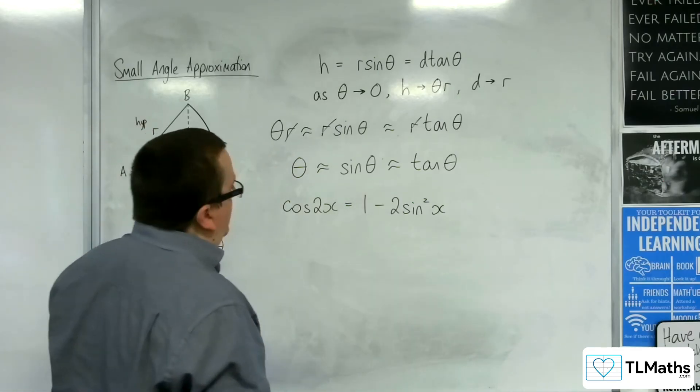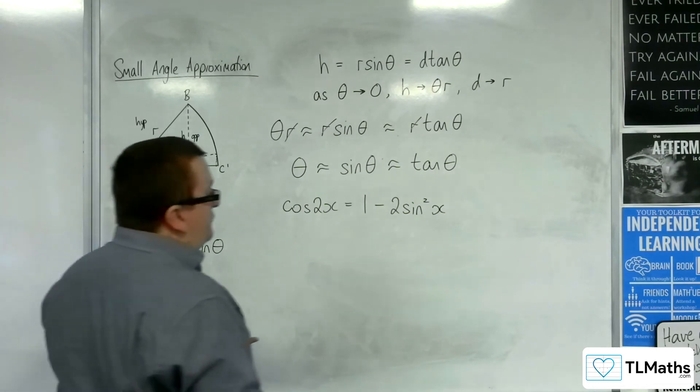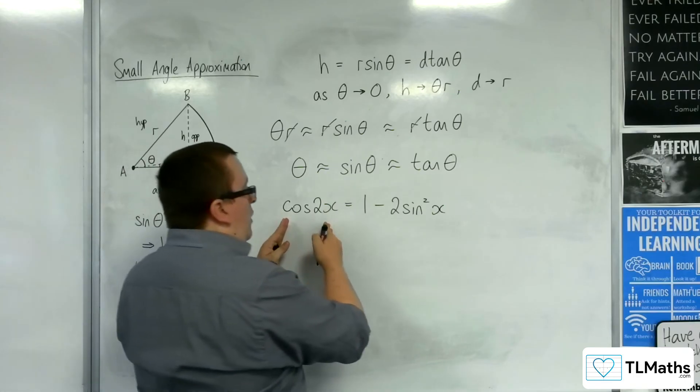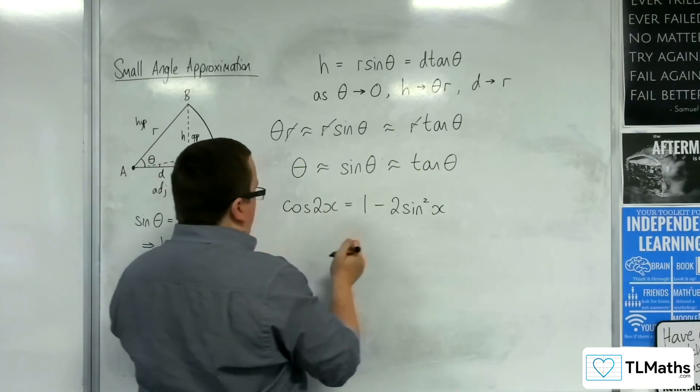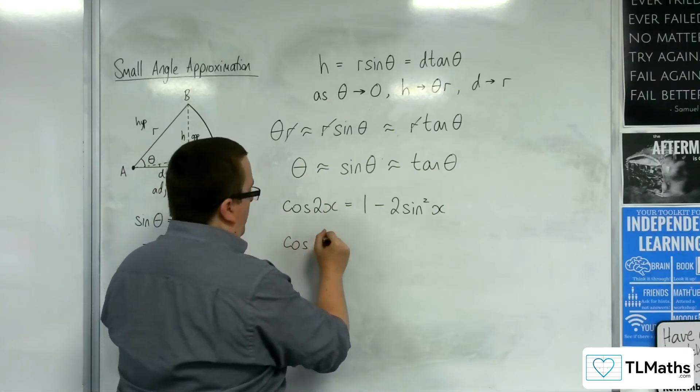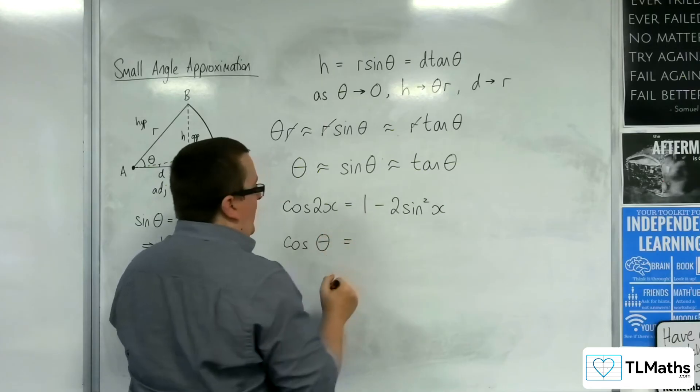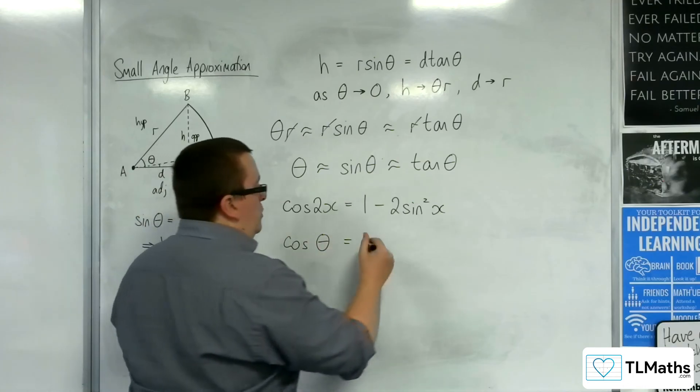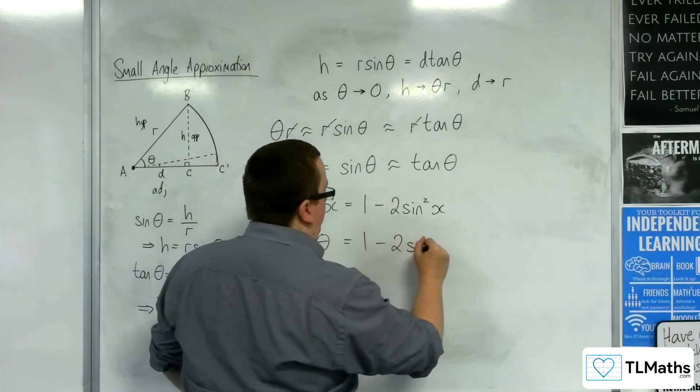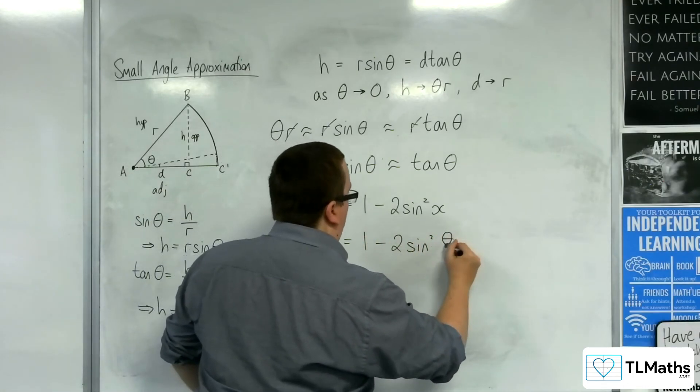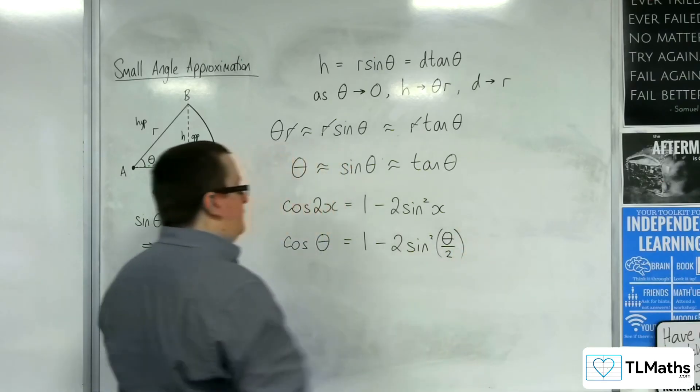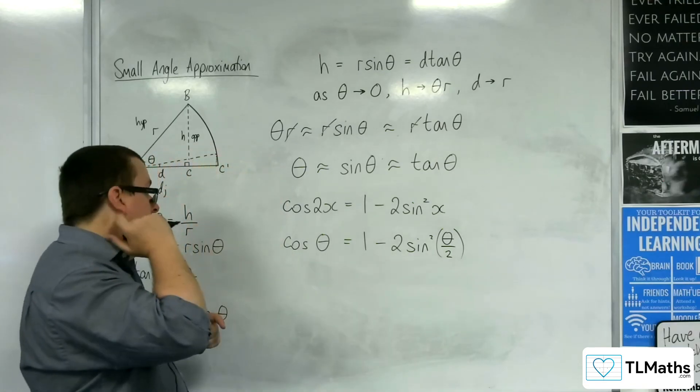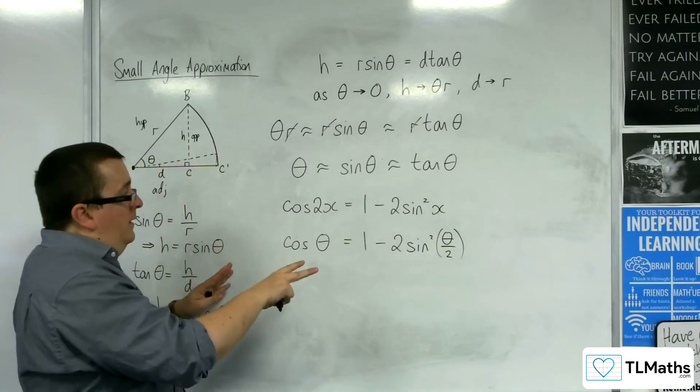So if I was to then say that I wanted an approximation for cosine of an angle, then cosine of theta is equal to where theta is 2x. That means that x is theta over 2. So 1 take away 2 sine squared of theta over 2. So that is the double angle formula in use there.